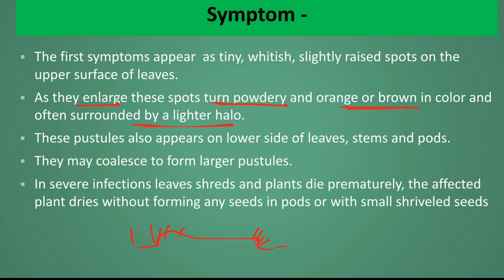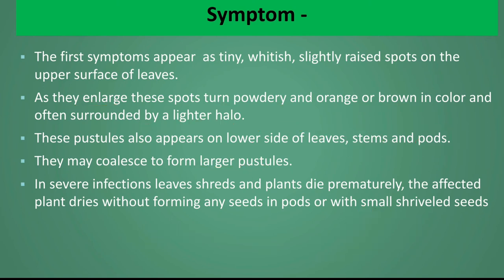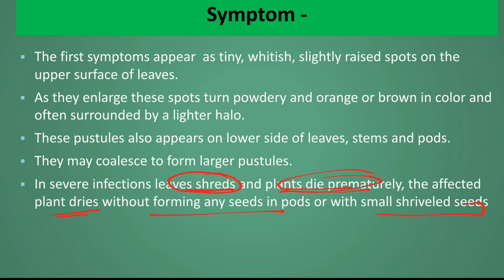The cells surrounding the pustules turn yellow. These pustules also appear on the lower side of leaves, stems and pods. Multiple pustules may coalesce to form larger pustules. In severe infection, leaves shred and the plant dies prematurely. Affected plants dry out without forming any seeds, or with small shriveled seeds.